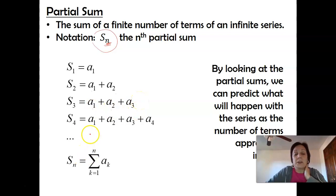So for example, if my series was just 1, 2, 3, 4, 5, 6, 7, my first partial sum would be 1, my second partial sum would be 1 plus 2 or 3, my third partial sum would be 1 plus 2 plus 3, which is 6, and so on and so on. By looking at the partial sums, hopefully it's going to give us a hint as to what the series itself is actually doing.